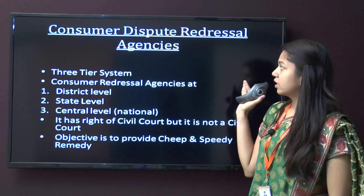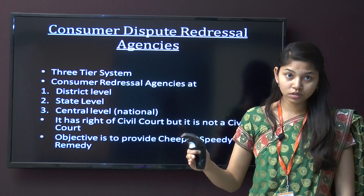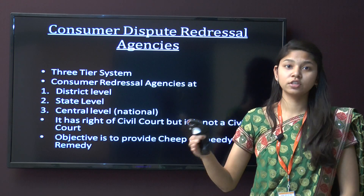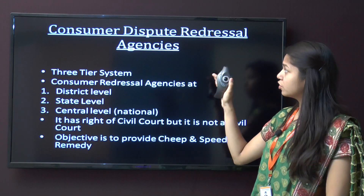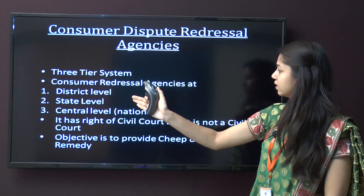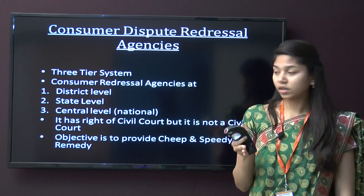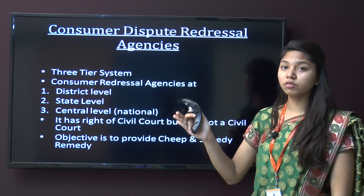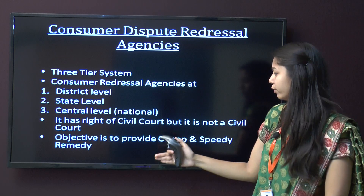Now we have seen the councils, whose work is to promote the rights of consumers and to frame laws for the Consumer Protection Act. But the agencies are those who will execute it. Consumer Dispute Redressal Agencies are the consumer forums where we can go for justice. It is a three-tier system: district level, state level, and central level. It has the rights of a civil court but it is not a civil court. The objective is to provide cheap and speedy remedy.